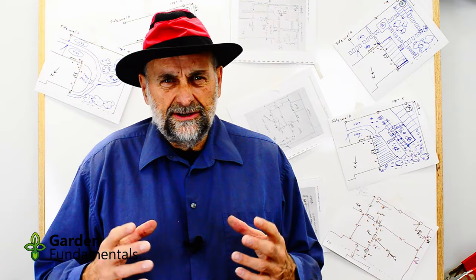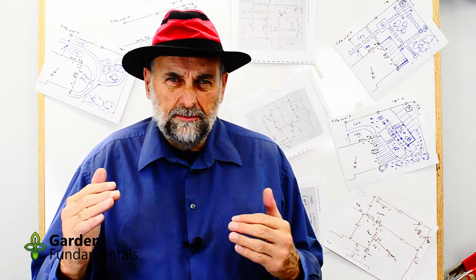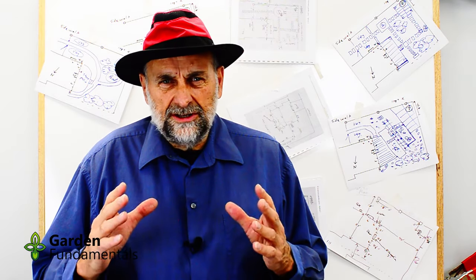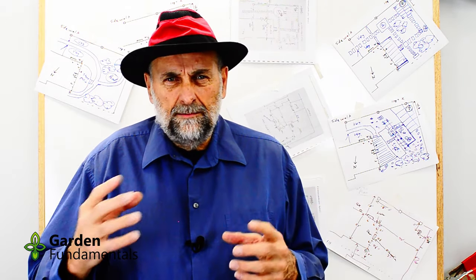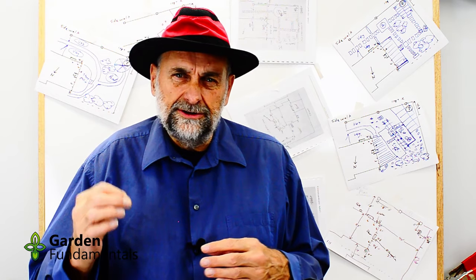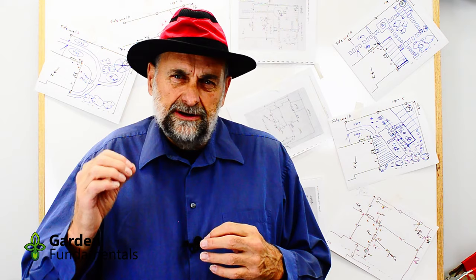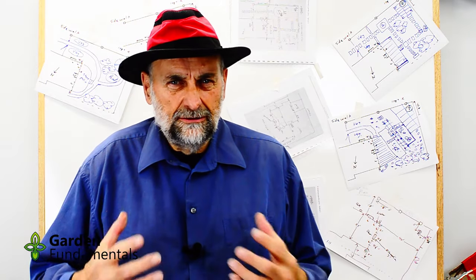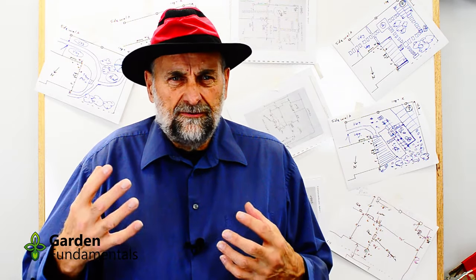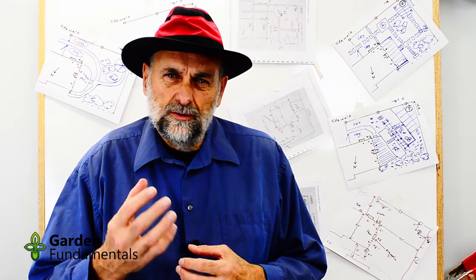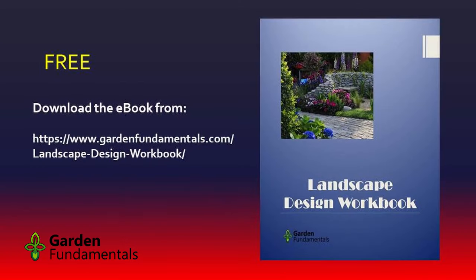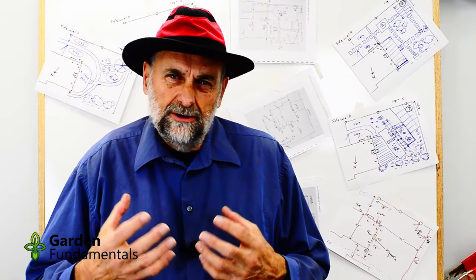Up to this point I've suggested you do all your drawings on a single piece of paper, but now I'm going to suggest you go to a bigger piece of paper. In my case I'm using each square equal to two feet, and it would be better to go to each square equaling one foot. That means using more paper — I actually have to take four pieces and glue them together — but a larger format gives you more accuracy. For the course I'll stick to one piece to fit the landscape design workbook.